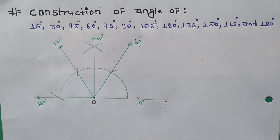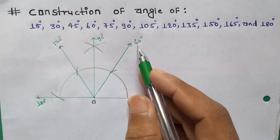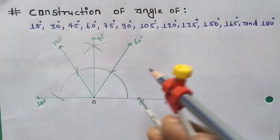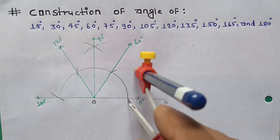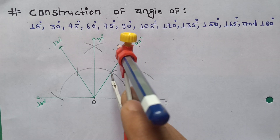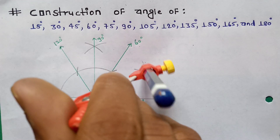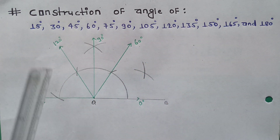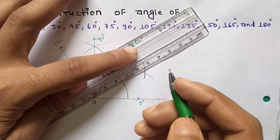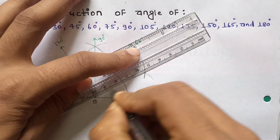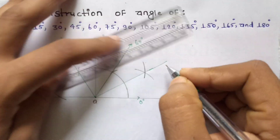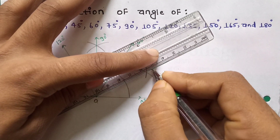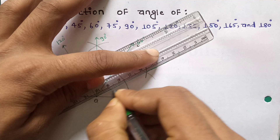The mid value of 60 degrees is 30 degrees. So if you want to draw 30 degrees, from point 0 degrees cut the line and from 60 degrees cut the line. It will be 30 degrees. The line is 30 degrees.